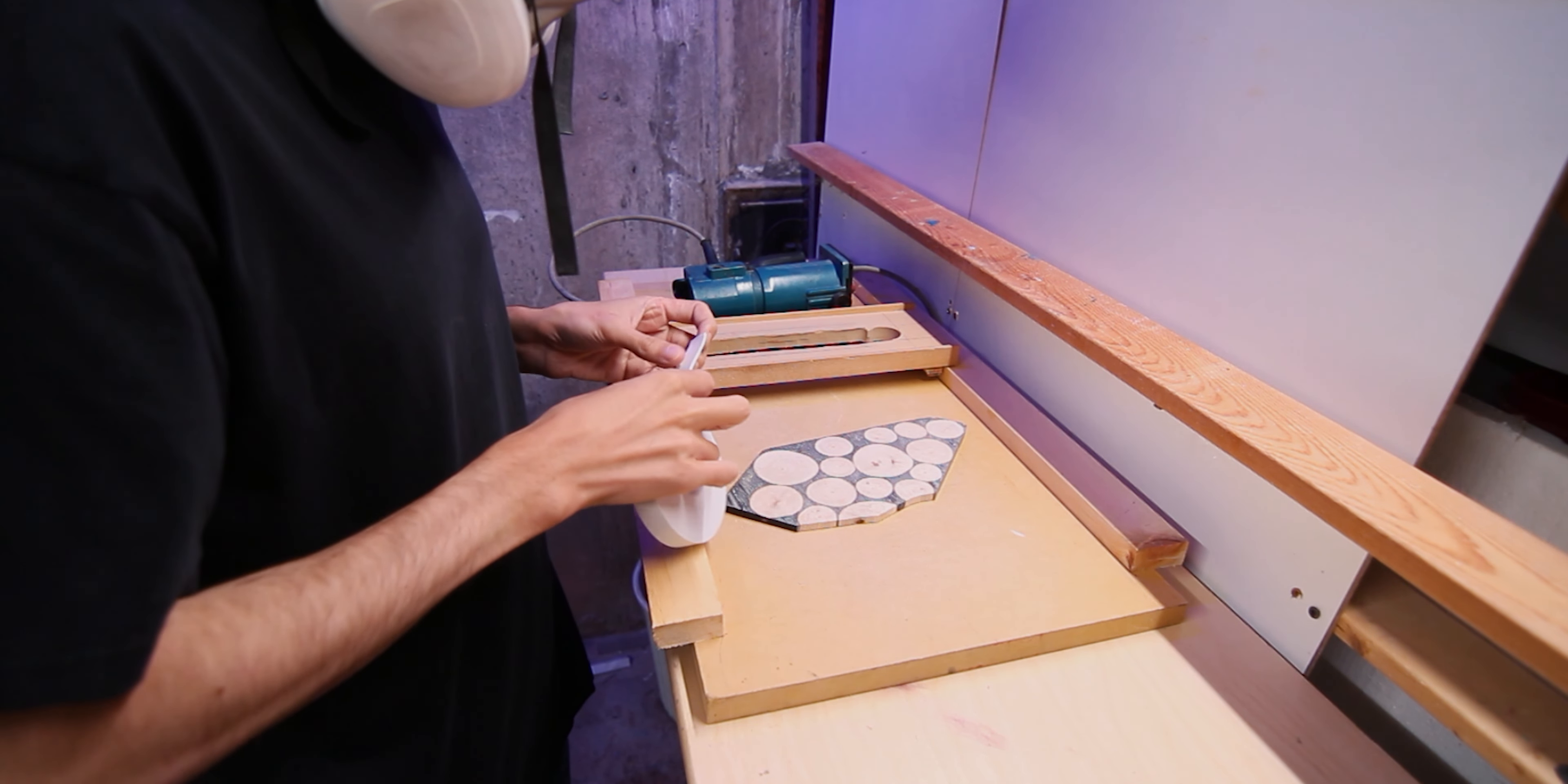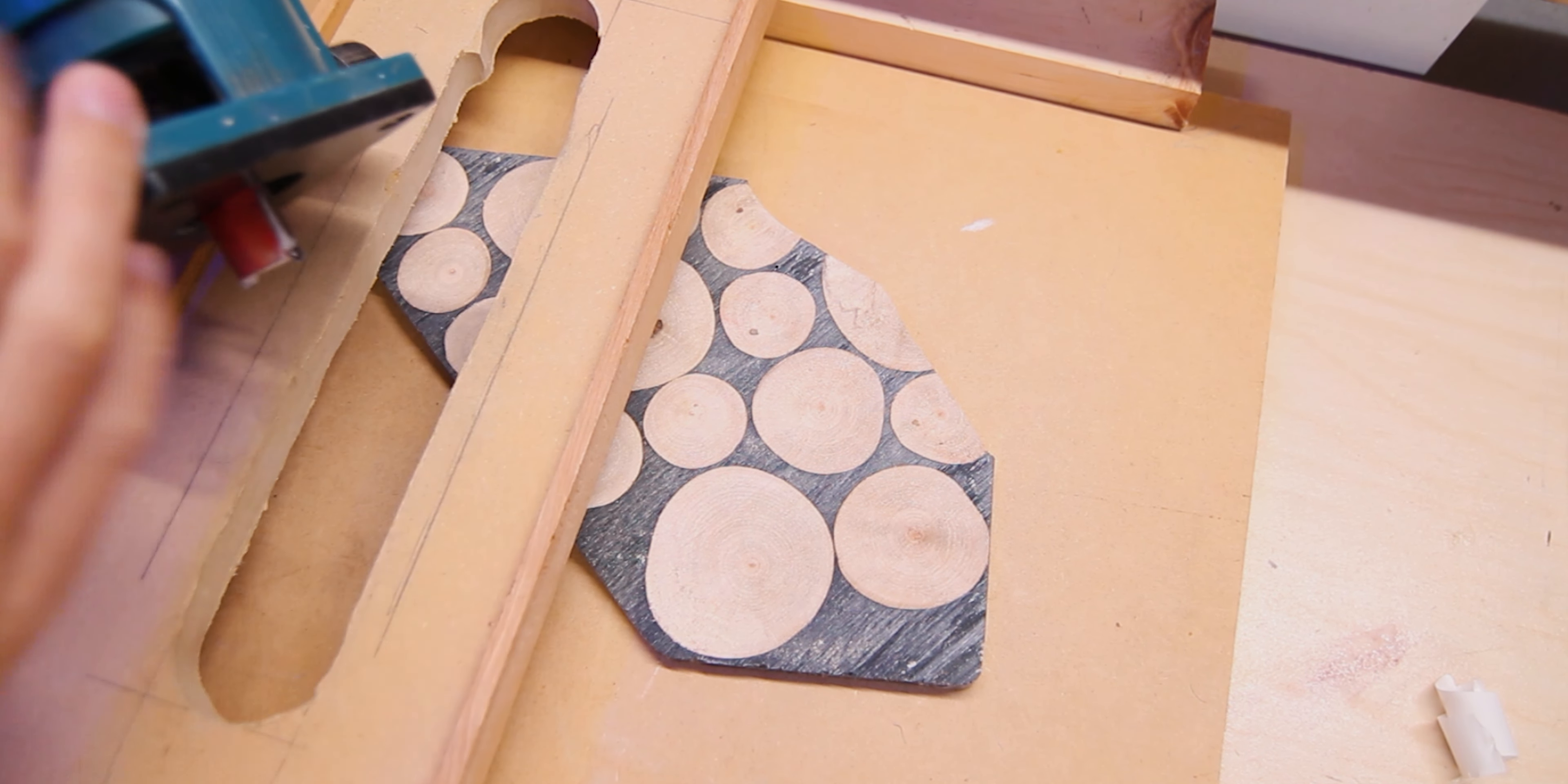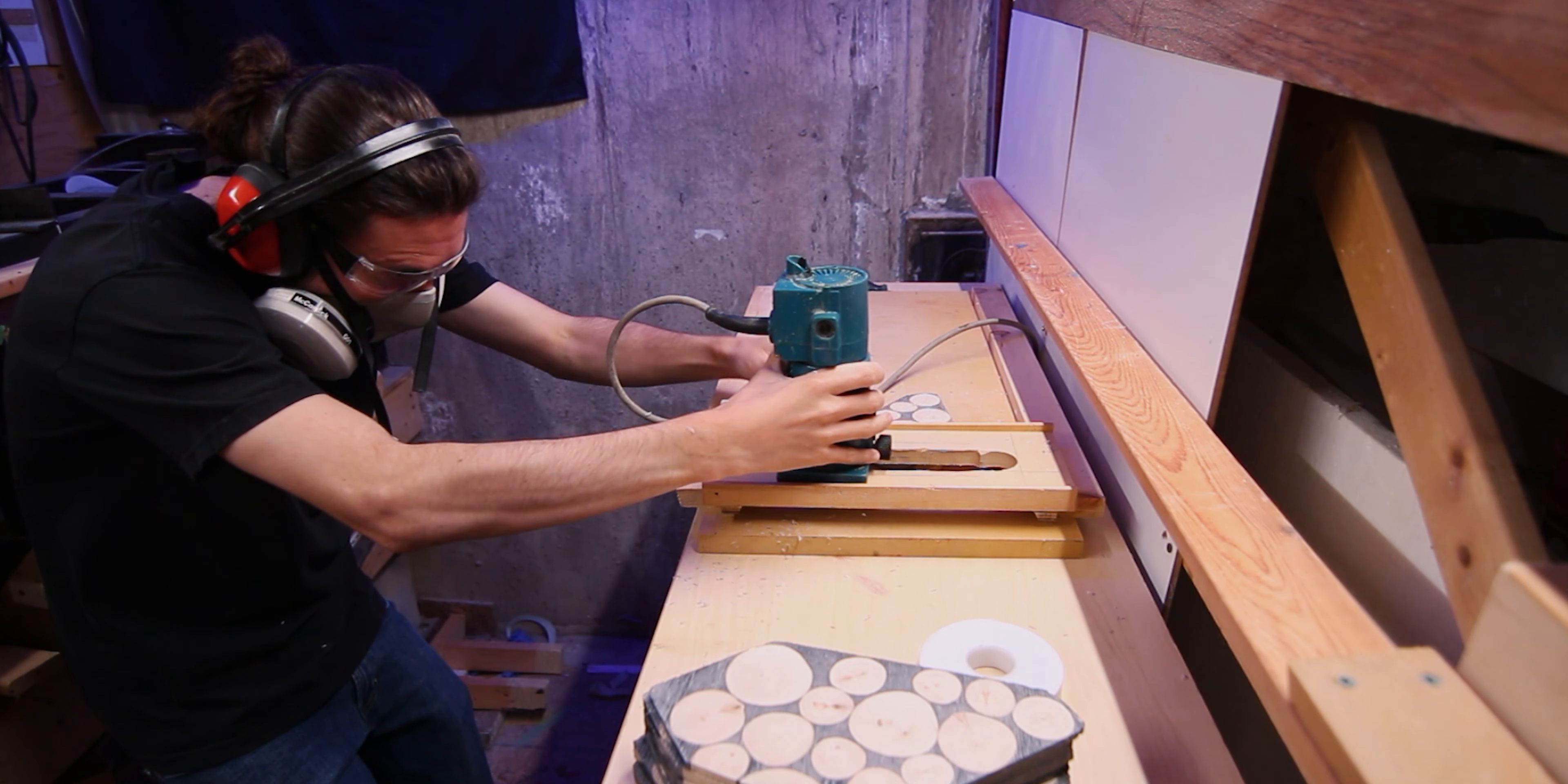Now that I have all my fin panels milled out, I'm going to stick them on my router jig and I'll be able to flatten one side and then flip them over and flatten the other. This will allow me to get two panels the same thickness and they'll be nice and parallel, so it'll be easy to foil them and get them close to a match.